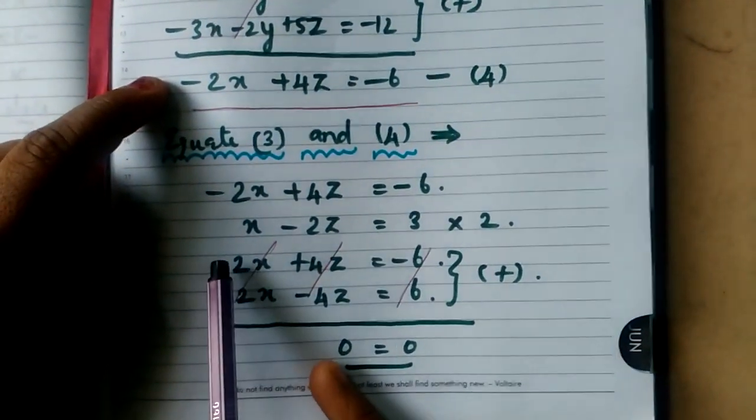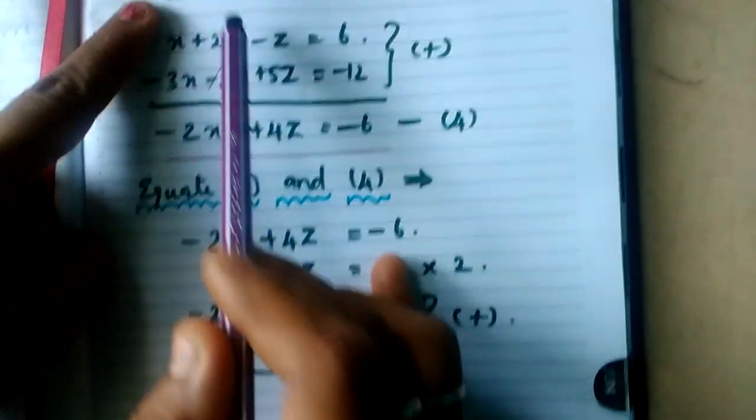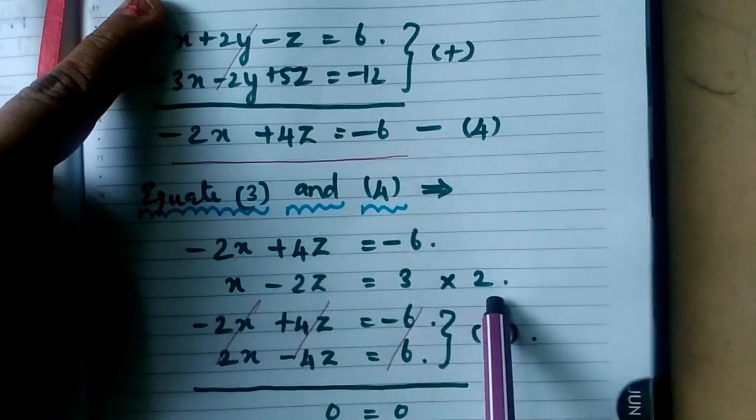So first, I am going to eliminate the X term. X term I want to eliminate, what I have to do? The whole term of the third equation should multiply by the number 2.